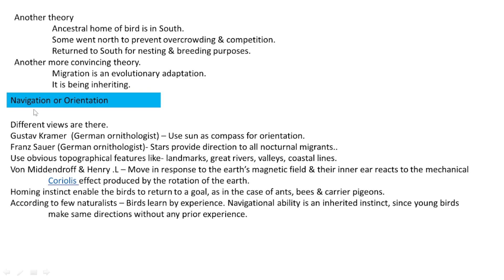Next, we look at how birds navigate and orient themselves. Gustav Kramer, a German ornithologist, proposed that birds find their direction by using the position of the sun as a compass. Franz Sauer, also a German ornithologist, proposed that nocturnal birds use stars to find their direction. Some birds also use topographical features like landmarks, great rivers, and valleys for orientation.